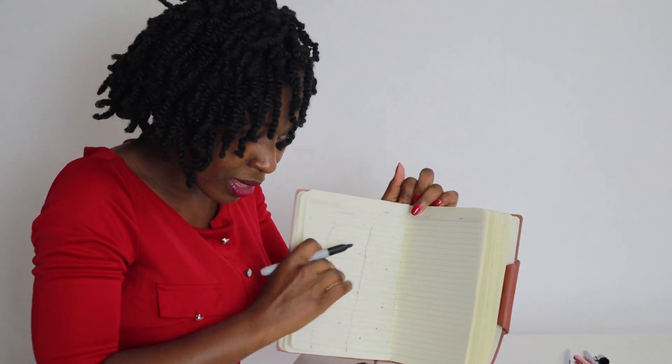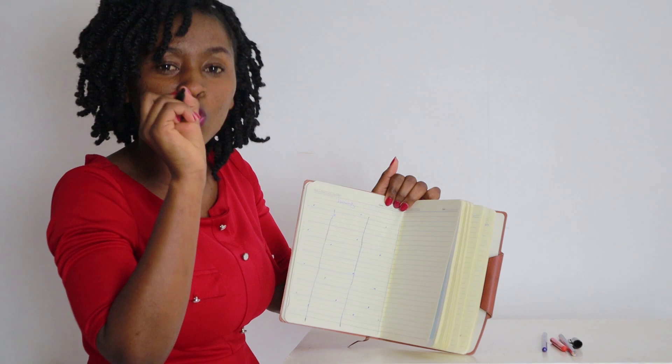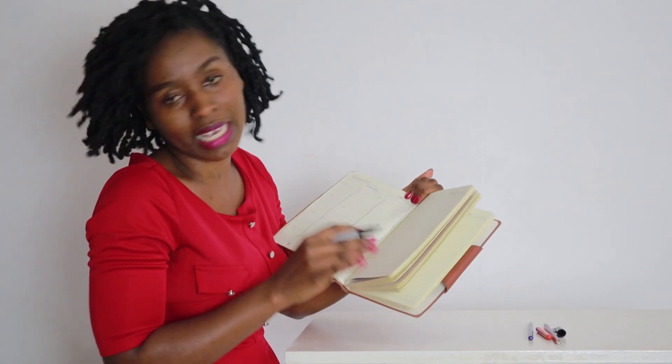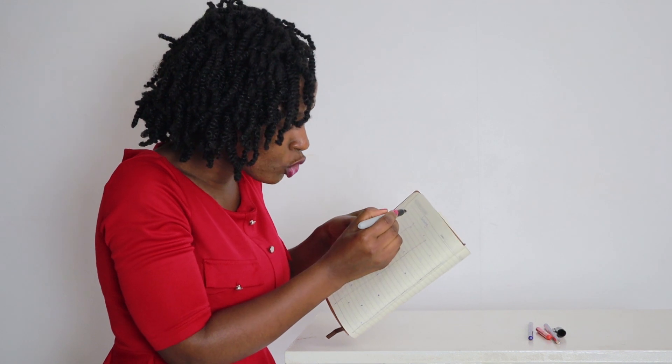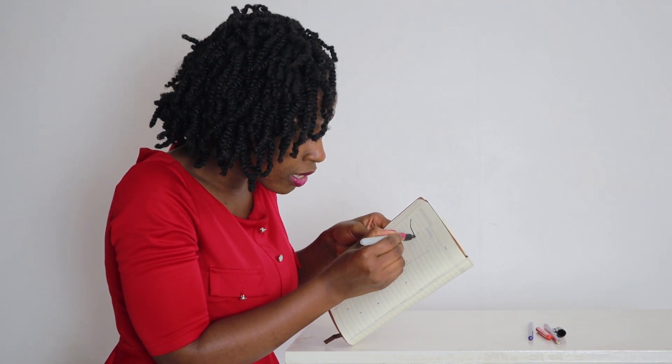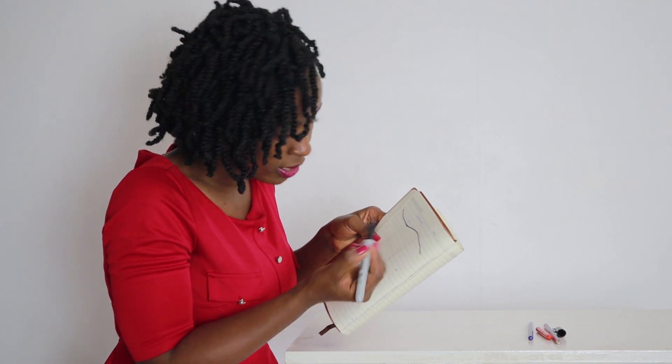Then make sure they do it over and over. When they master that, then proceed to joining dots zigzagly. And how do we do it? Then have the child join the dots like this, like this, like this.